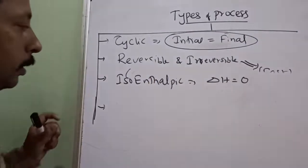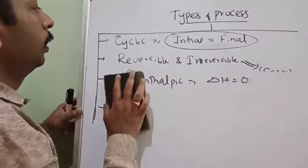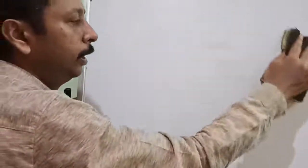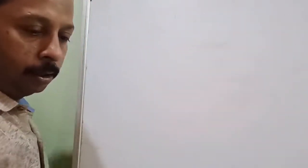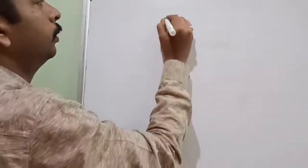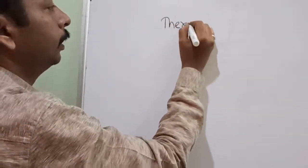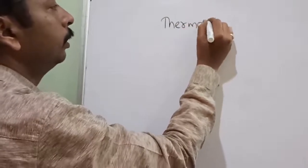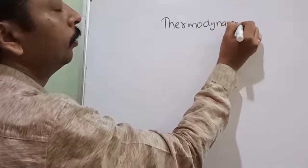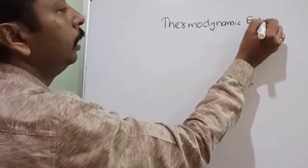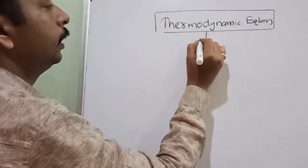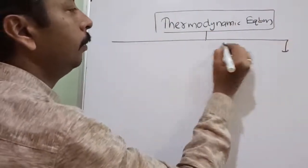Next topic: thermodynamic equilibrium. People have the wrong meaning of thermodynamic equilibrium. The thermodynamic equilibrium contains three further types of equilibrium. A system is said to be at thermodynamic equilibrium when it is at all three equilibria simultaneously.